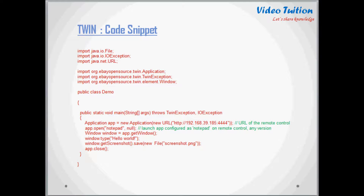Now that the server is running, you can create your first test. The only language available to pilot the TWIN server is Java, so the next step is to download the TWIN client standalone JAR. Start a new Java project and add the JAR to the project classpath. Create a new class with a main method and paste the sample code in it. Finally, execute the code — you should see Notepad starting and a screenshot will be created in the root folder of your project.